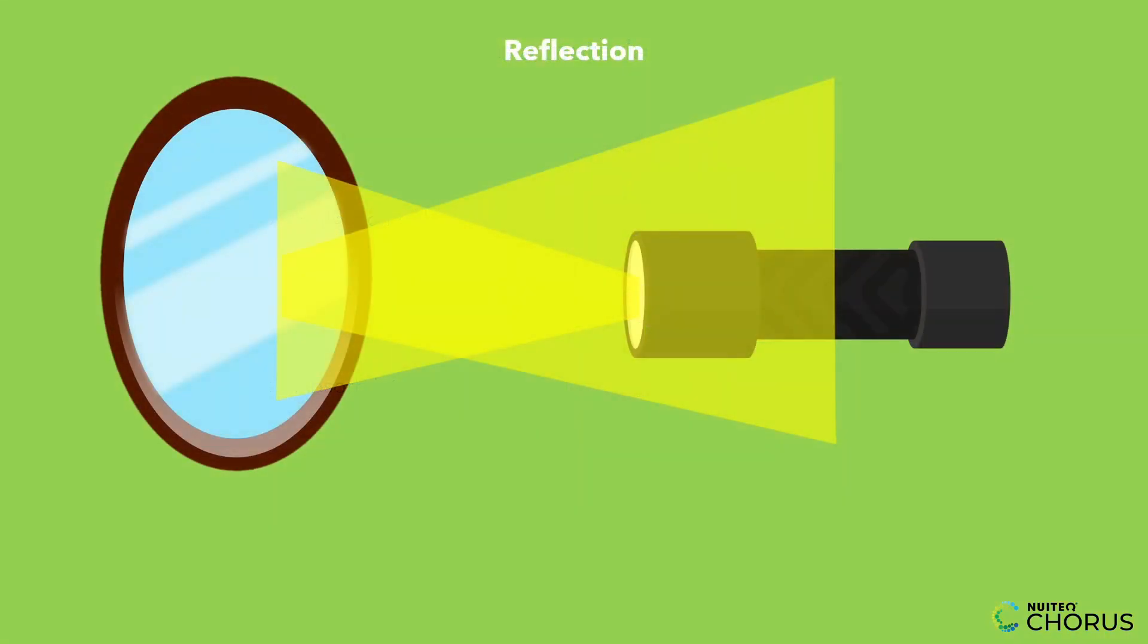Reflection is what happens when a wave bounces off a surface, like the light off the mirror. Some materials are really good at reflecting waves, like mirrors, while others are not, like paper.